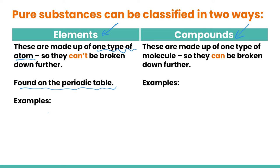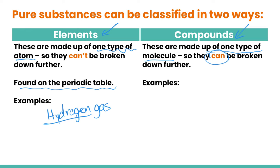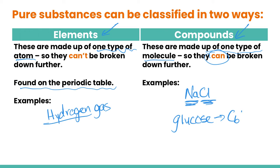Going back to our examples — hydrogen gas, sodium chloride, and glucose — hydrogen gas is a good example of an element because hydrogen is found on the periodic table. Compounds, on the other hand, are made up of one type of molecule but can be broken down further, consisting of at least two or more types of atoms. For example, table salt or sodium chloride is made up of sodium atoms and chlorine atoms, and glucose has the formula C6H12O6, made up of carbon, hydrogen, and oxygen atoms — so this is an example of a compound.